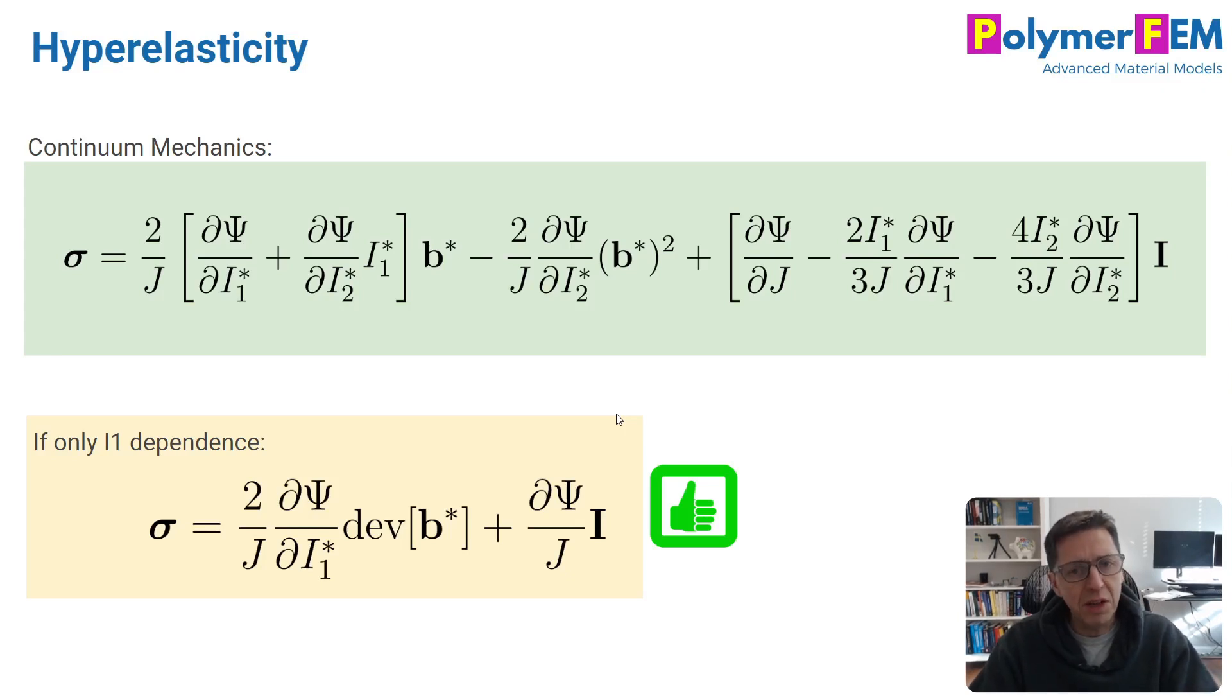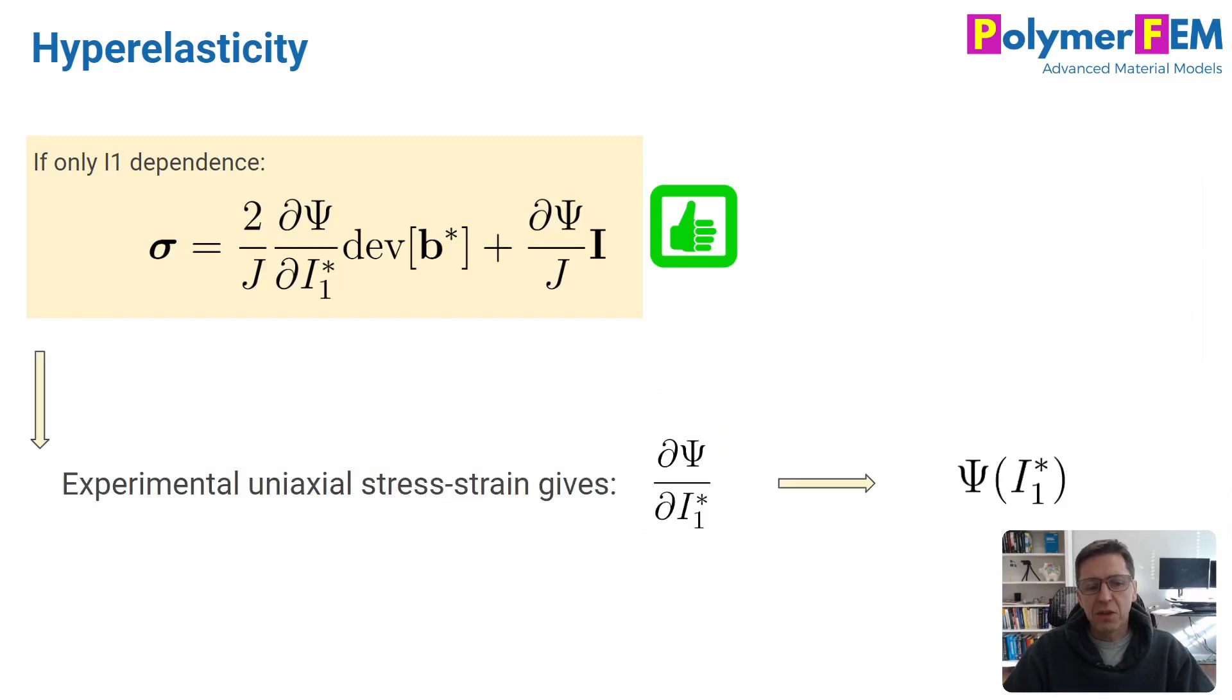It turns out in real life that the dependence on the second invariant is very much smaller than the first invariant, and in most cases you can actually get away with this simplification where you remove the dependence on i2, and you get a scalar equation for energy as a function of one invariant i1. If we have experimental data, we can actually find how this function psi needs to be, because if we know the stress and deformation, we can directly calculate the partial derivative of psi with i1 for each value of i1 that we measured.